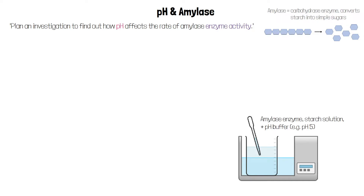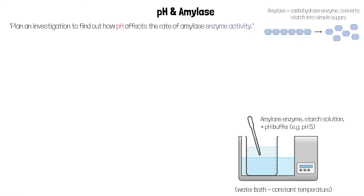amylase enzyme and a pH buffer. This keeps the solution at a particular pH, such as pH 5. We also place the beaker in a water bath to keep it at a constant temperature, so we can be sure that temperature isn't affecting the enzyme's activity.